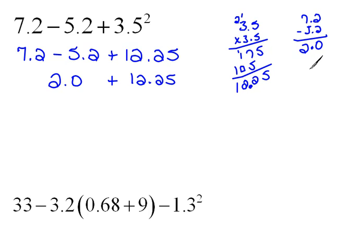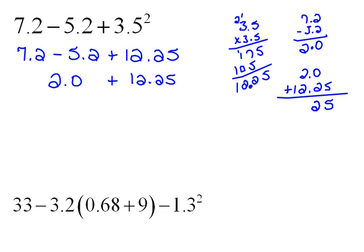So we now have 2.0 plus 12.25. We just do our addition, keeping things lined up. That gives us 5, 2, 4, 1 — so our final answer is 14.25.